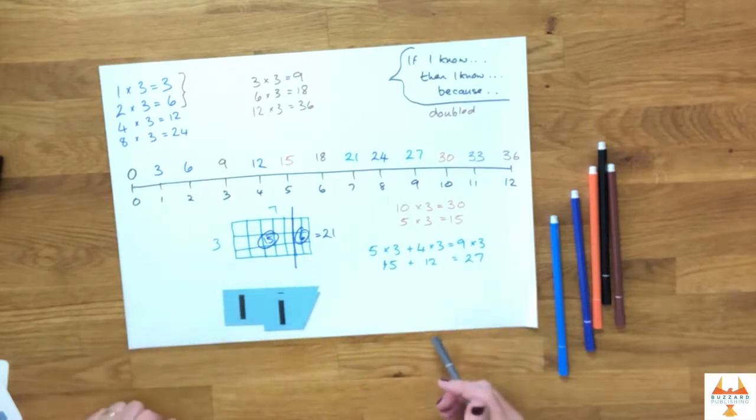So there we've built the three times table on our number line using the language if I know, then I know, building on our known facts.